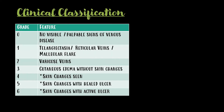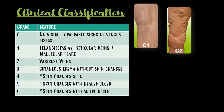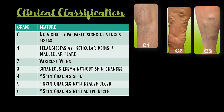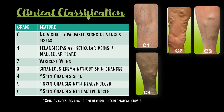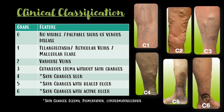Coming to the clinical classification of varicose veins, there are six grades. In grade 0, there are no visible or palpable signs of venous disease. In grade 1, there is telangiectasia, reticular veins, or malleolar flare. Grade 2 is presented with varicose veins. In grade 3, there is cutaneous edema without any skin changes — skin changes referring to eczema, pigmentation, or lipodermatosclerosis. Grade 4 is presented with skin changes. In grade 5, there are skin changes with a healed ulcer. In grade 6, skin changes are present with an active ulcer.